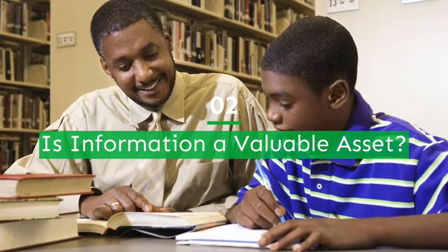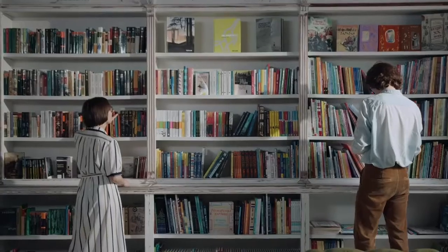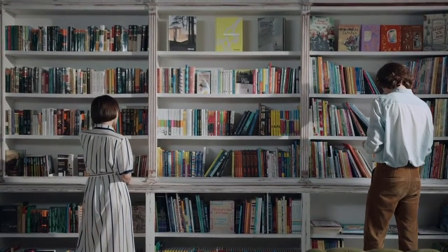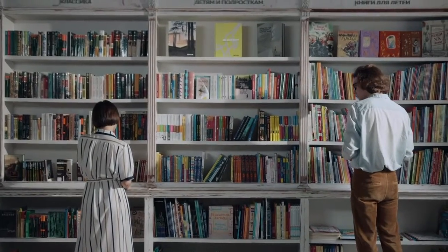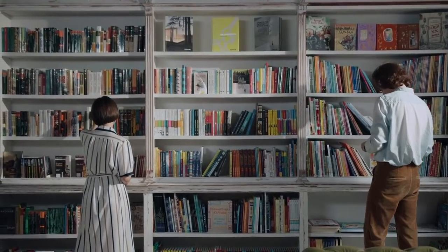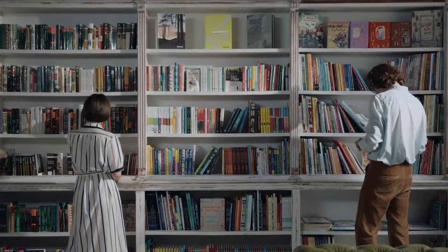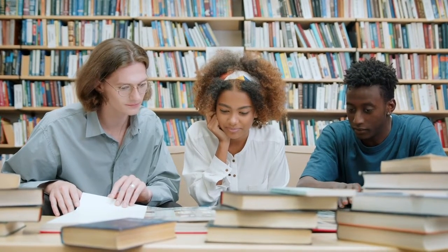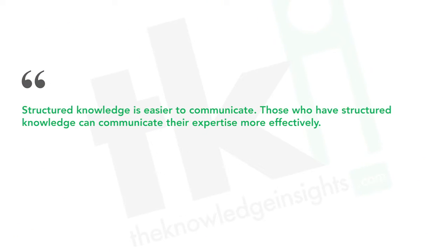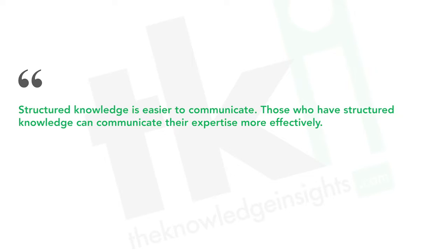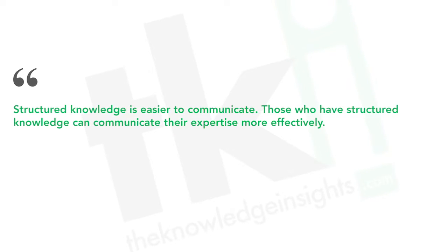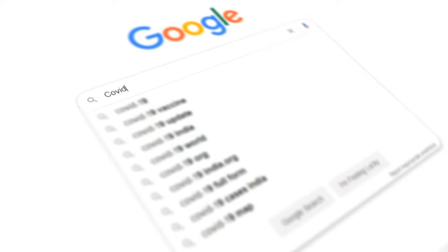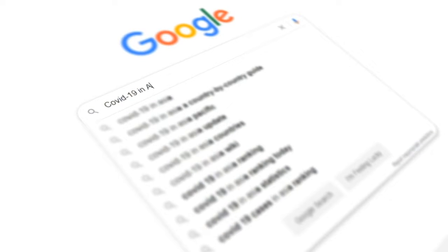Number 2: Is information a valuable asset? Knowledge is an important asset for individuals. However, not everyone can use it, which is a problem in a society where knowledge is scarce and can be stolen easily. Moreover, knowledge is often not given to people in its entirety. Here are some reasons why knowledge is an asset: structured knowledge is easier to communicate. Those who have structured knowledge can communicate their expertise more effectively. Structured knowledge is based on a common language, rules of thumb, and conceptual frameworks. However, some knowledge is not structured and is best left unstructured.